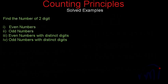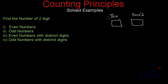A two-digit even number will have two places. Let me make two boxes — one is the one's place and this one is the tenth place. What we have to find is the number of even numbers which have two digits.